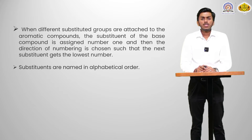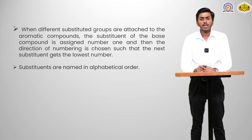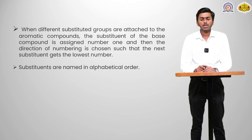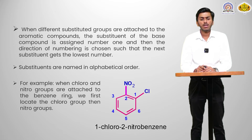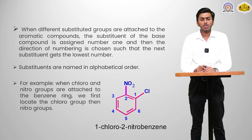When different substituent groups are attached to aromatic compounds, the substituent of the base compound is assigned number 1, and then the direction of numbering is chosen such that the next substituent gets the lowest number. Substituents are named in alphabetical order. For example, when a chloro and nitro group are attached to a benzene ring, we first locate the chloro group, then the nitro group.